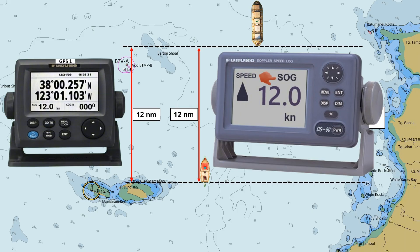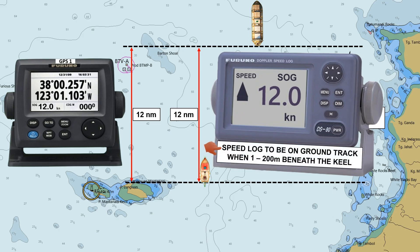On some merchant ships, a written note is posted near the Doppler log, indicating that the speed log should be set to ground track when the depth is between 1 to 200 meters beneath the keel.